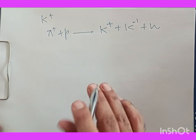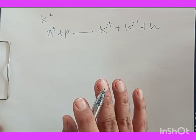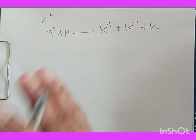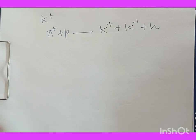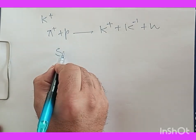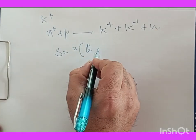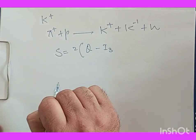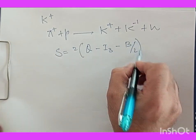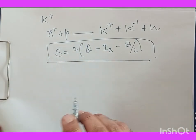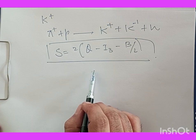This strangeness is related to the electric charge, the third component of isospin I₃, and the baryon number. The relation is: S = 2Q − 2I₃ − B. This relation is known as the Gell-Mann–Nishijima relation.